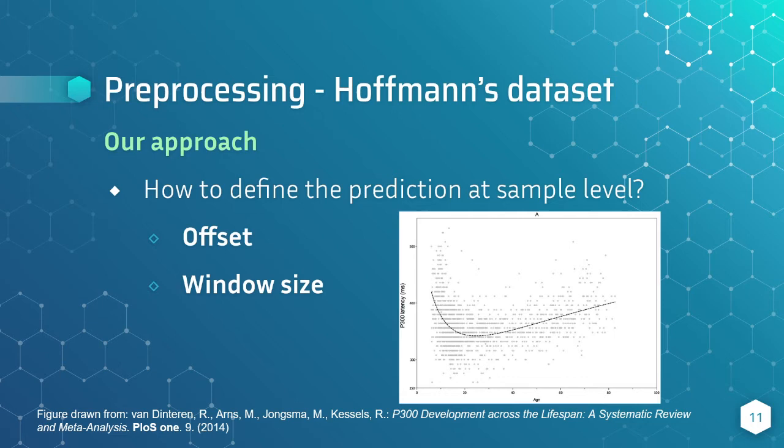And now, the question is, how can we define the prediction at a sample level? In the figure, I show an example of the P300 latency versus the age of the subjects. Here we can directly see the inter-variability between subjects, so we need to keep it in mind.